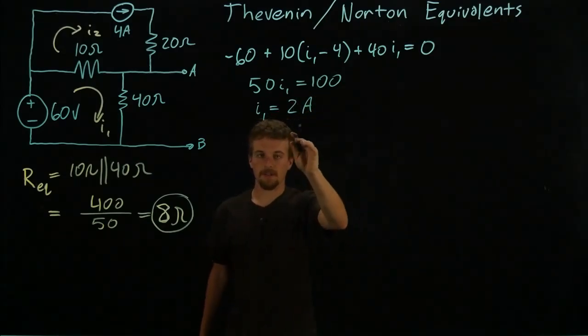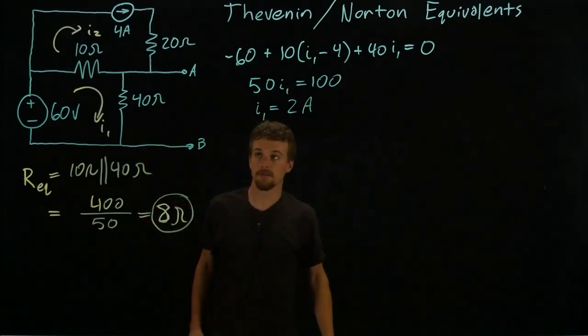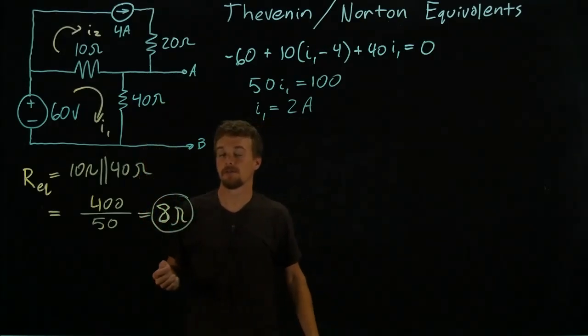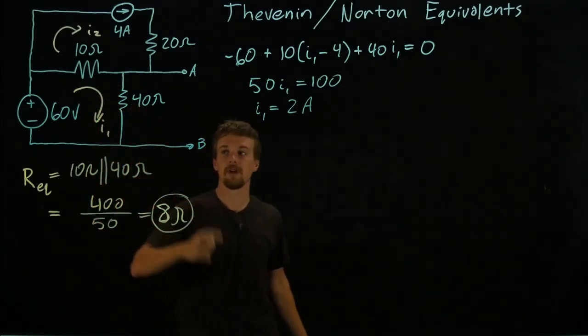Okay, so that is just our mesh current. What we're actually looking for is the voltage in between A and B. So we know what's going to define that is the current through this resistor.